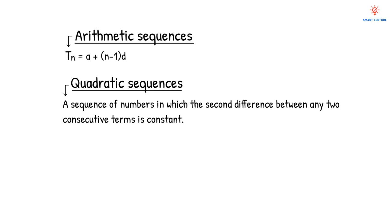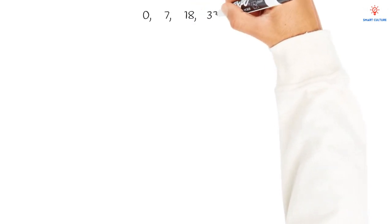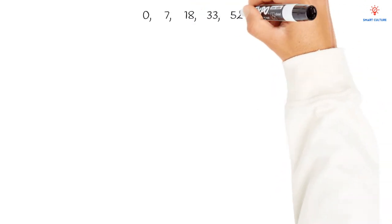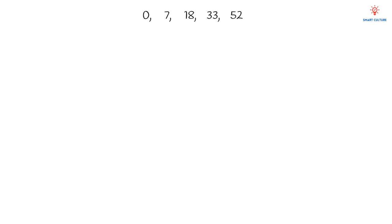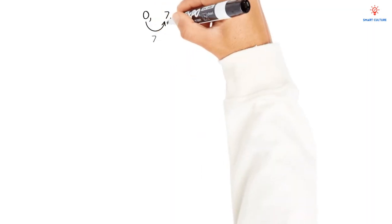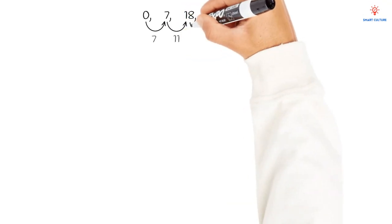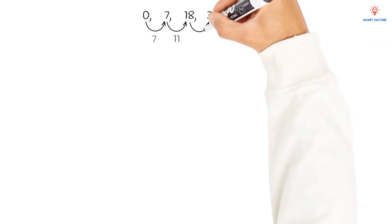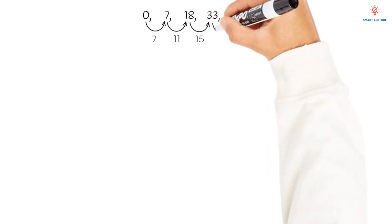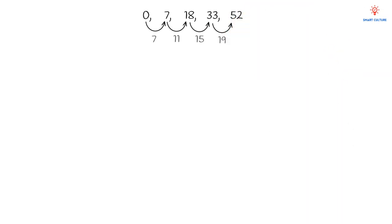Let's take a look at this example: 0, 7, 18, 33, and 52. First we'll look at the first differences. The difference between 0 and 7 is 7; between 7 and 18 is 11; between 18 and 33 is 15; and between 33 and 52 is 19. So now we have the first differences: 7, 11, 15, and 19.